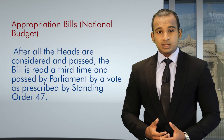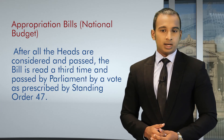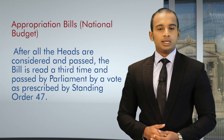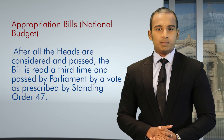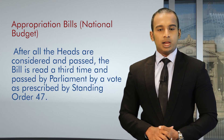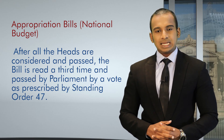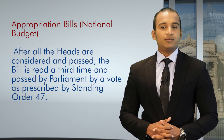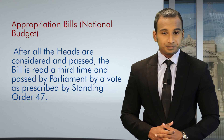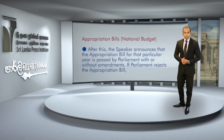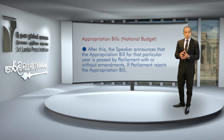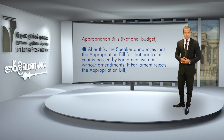After all the Heads are considered and passed, the bill is read a third time and passed by Parliament by a vote as prescribed by Standing Order No. 47. After this, the Speaker announces that the Appropriation Bill for that particular year is passed by Parliament, with or without amendments.